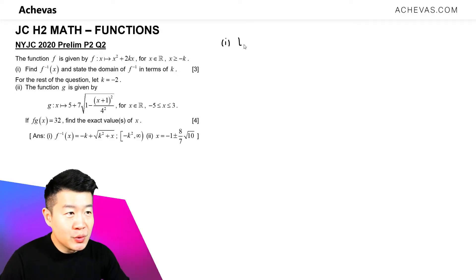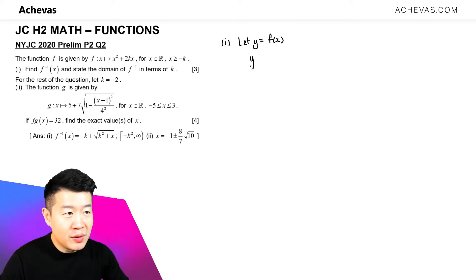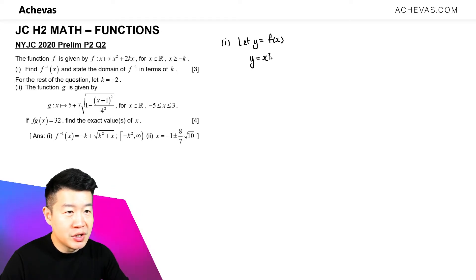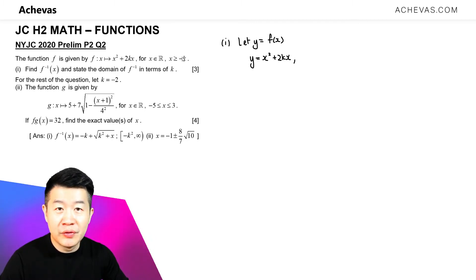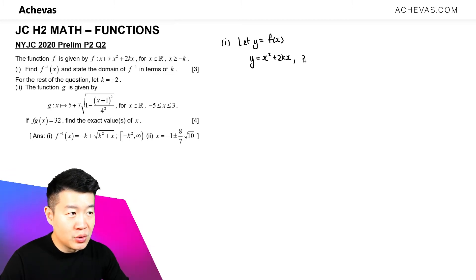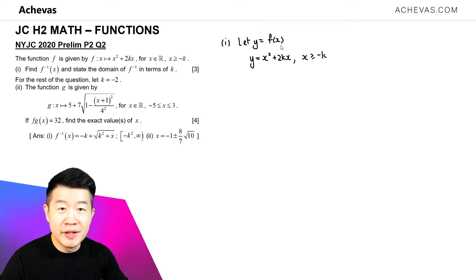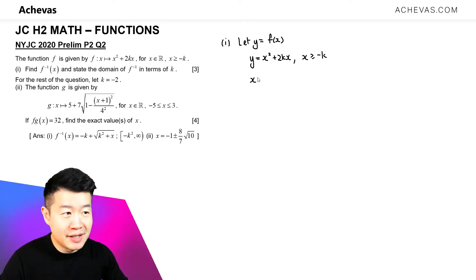The first thing we are going to do is let y be equal to f(x), which means y is equal to the expression of f(x), which is x squared plus 2kx. But let's not forget that f(x) is not just the expression — we should also take into account the domain. So x is supposed to be bigger or equal to minus k in order for this equation to hold. The next thing we are going to do is to make x the subject.